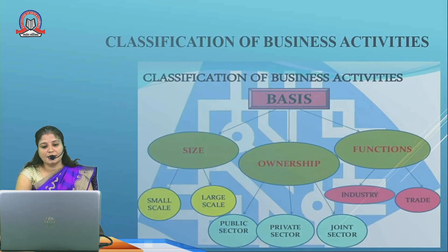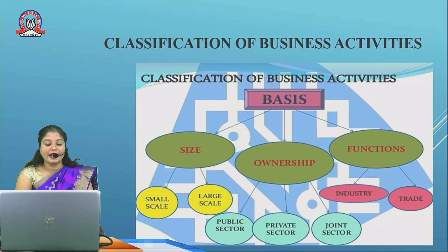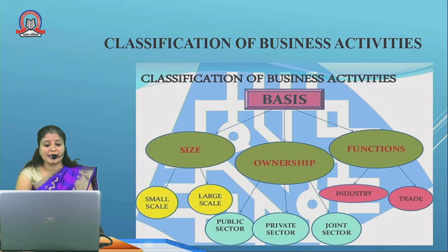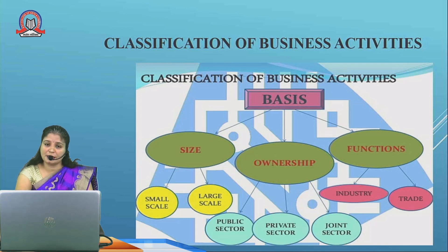Next is the classification of business activity. Business can be classified on the basis of three areas: size, ownership, and function. On the basis of size, some businessmen want to run the business on a very small scale because they have less capital. For example, our villagers run businesses like selling handmade articles, selling pickles — producing pickles and papad is one of the best examples of small scale industries.